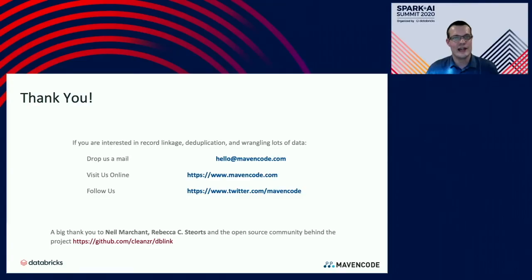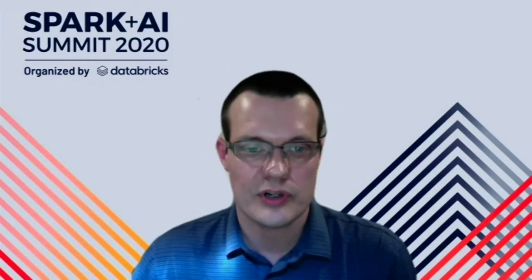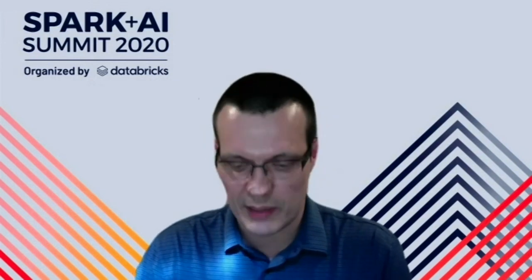In summary, we ran a Bayesian generative model for data linkage and deduplication with Apache Spark. By partitioning datasets and leveraging multiple Spark nodes, we achieve scalability to larger datasets with decreased runtime. We have support for inexact and fuzzy matching via string comparison and distance functions. We achieve acceptable match accuracy despite this being an unsupervised approach — no large labeled training dataset required. We want to thank everybody for listening. If you're interested in record linkage, data deduplication, or wrangling large data, please visit us at mavencode.com. A huge thank you to the researchers Neil Martin, Rebecca Sturtz, and the open source community behind this project.